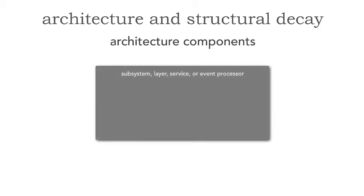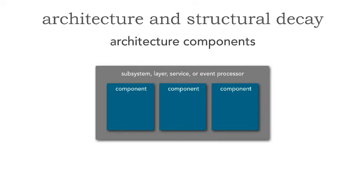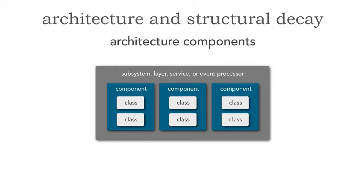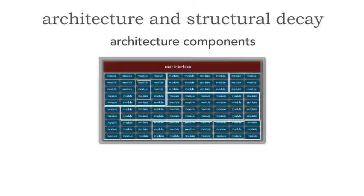If we've got some sort of subsystem, or a layer of the architecture — maybe a macro service, a differently deployed unit, or an event processor in an event-driven architecture — within that context, we as architects define components. These are the building blocks of an application. Once we define these, it's the development teams that actually build these components with classes. Let me show you an example.